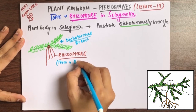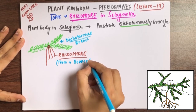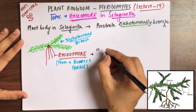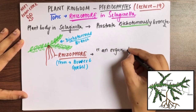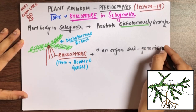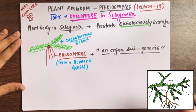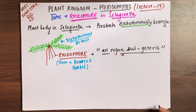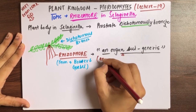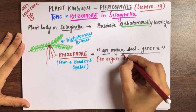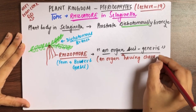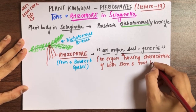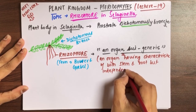The site of origin of the Rhizophore is the point at which dichotomous branching occurs. The Rhizophore term was discovered by Bower and Gobble. They used the term 'an organ sui generis' for the rhizophore, meaning an organ having the characteristics of both stem and roots, but independent in origin.